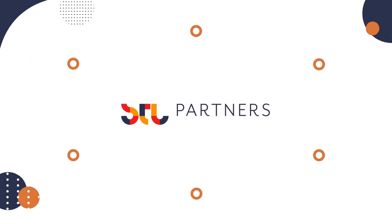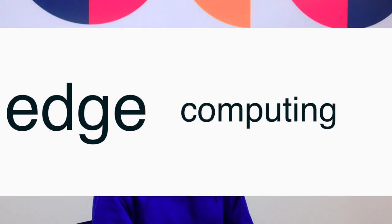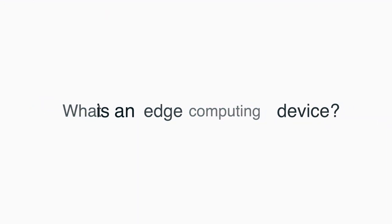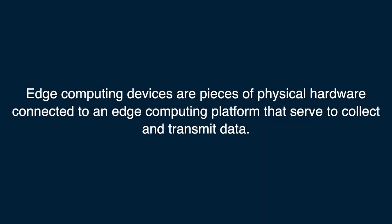This video is going to look at defining what edge computing devices are and then take a deep dive on smart cameras, which are an integral part of the edge ecosystem. At STL, we define edge computing devices as pieces of physical hardware connected to an edge computing platform that serve to collect and transmit data. This helps drive the application of edge computing across diverse industries. These devices are designed to fulfill specific roles and are equipped with the applications they need to accomplish specified tasks.